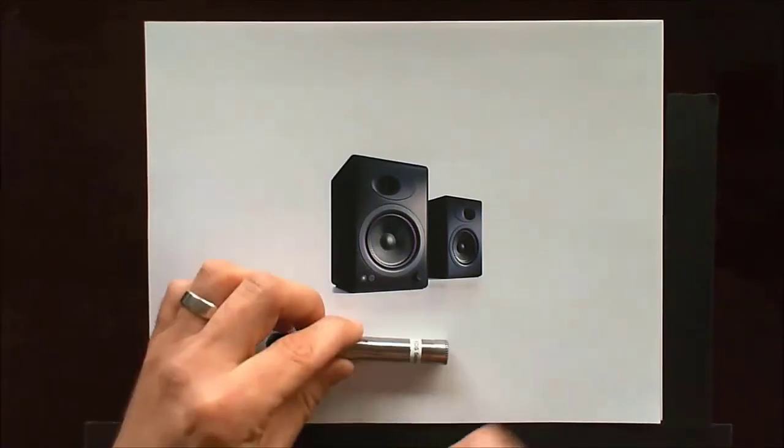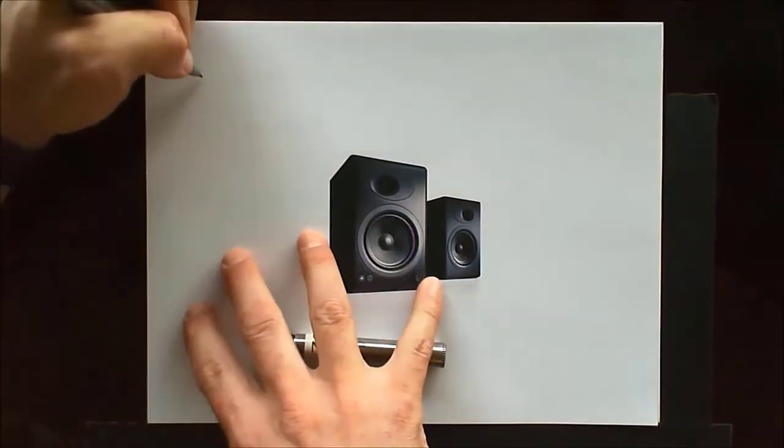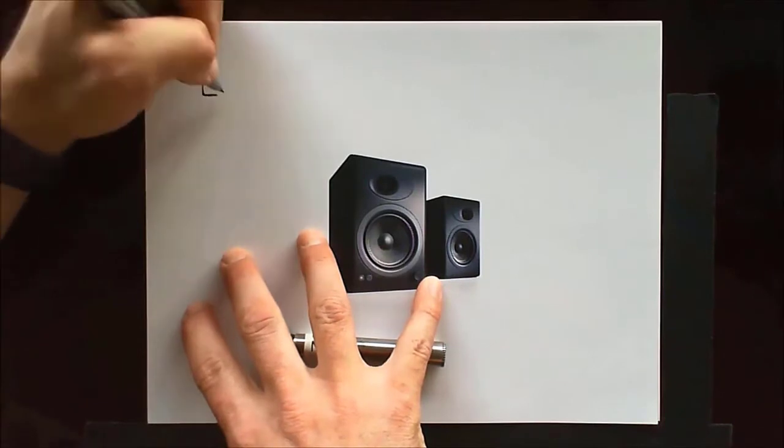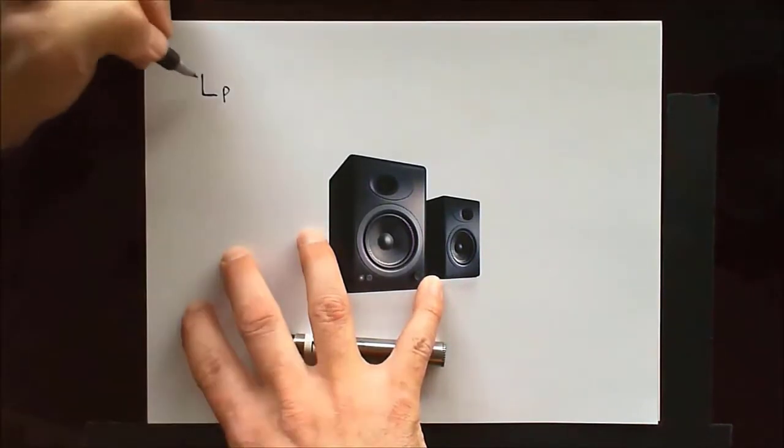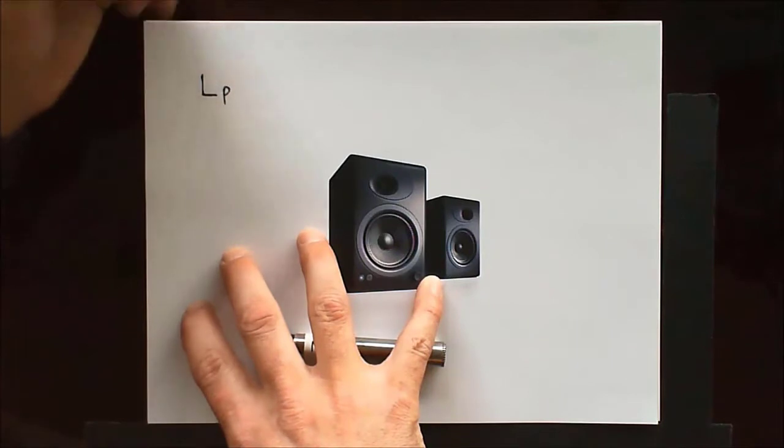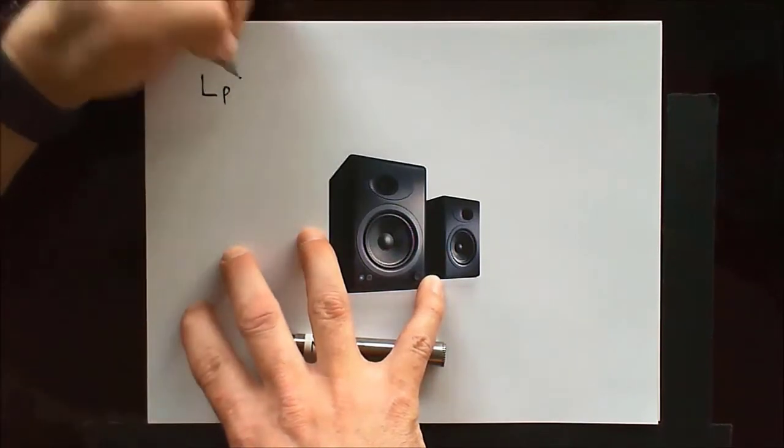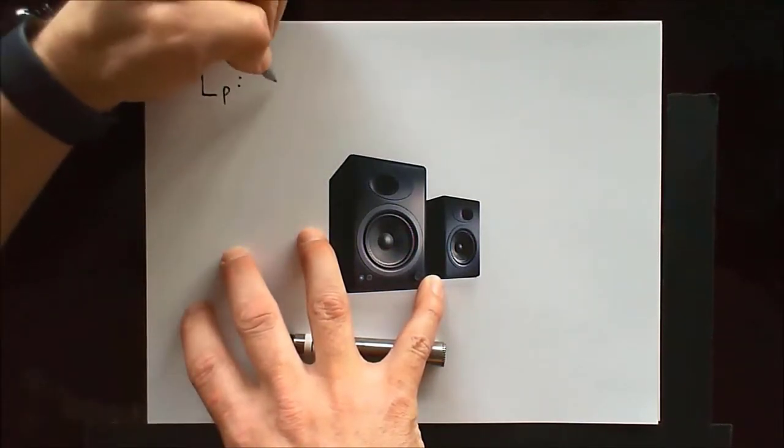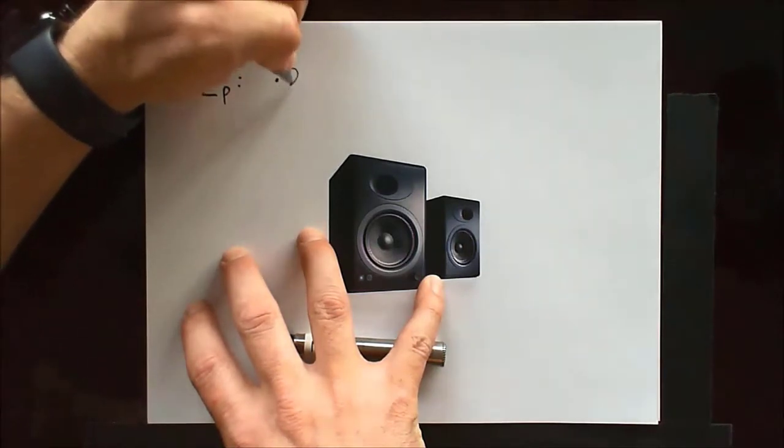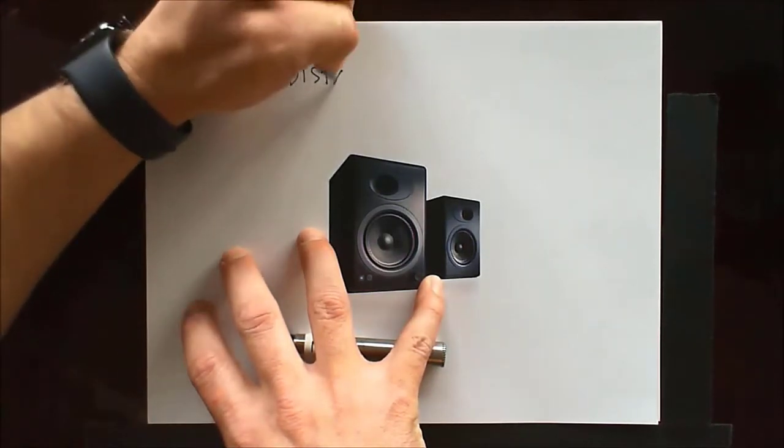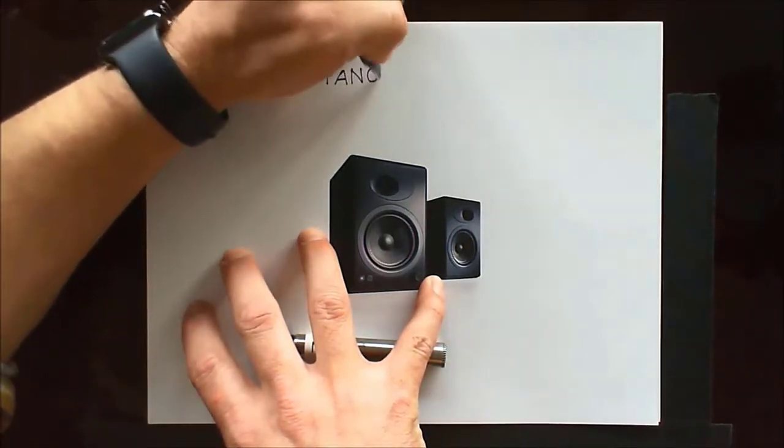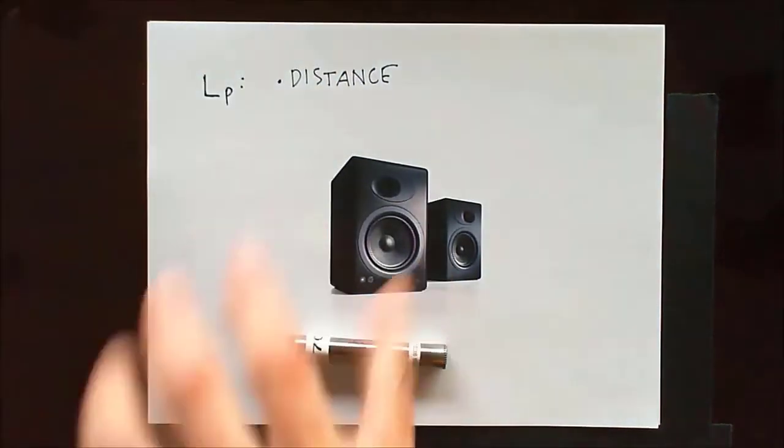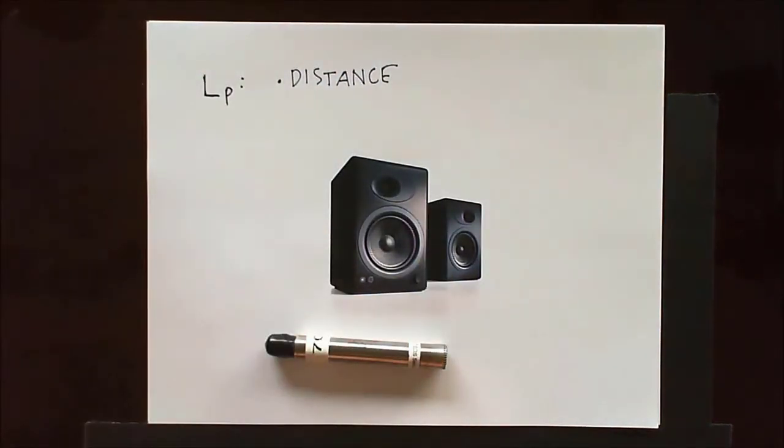Okay? So we see in this example that sound pressure, in this case I'm going to write that as L sub P. L for being level, P for pressure. We see that sound pressure is a function of distance, right? We measure something further away. It's not measured as loud as if we were up close.